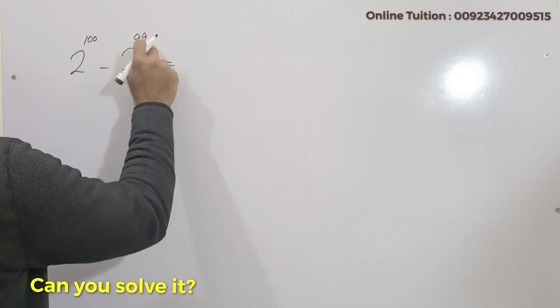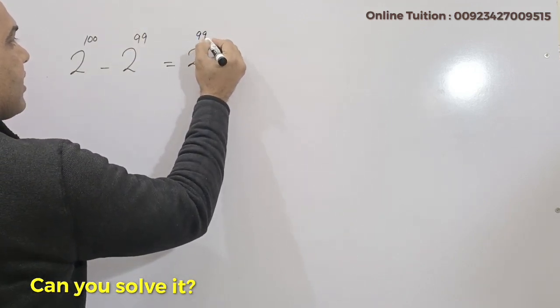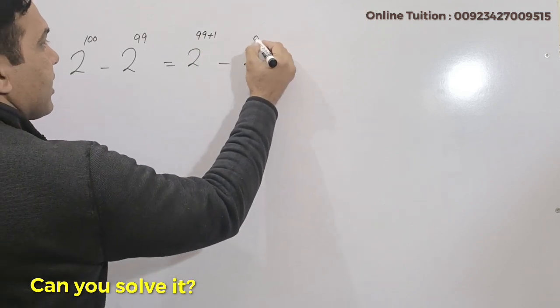Here, 2 raised to power 100 minus 2 raised to power 99. So 2 raised to power 99 plus 1, that's 2 raised to power 99.